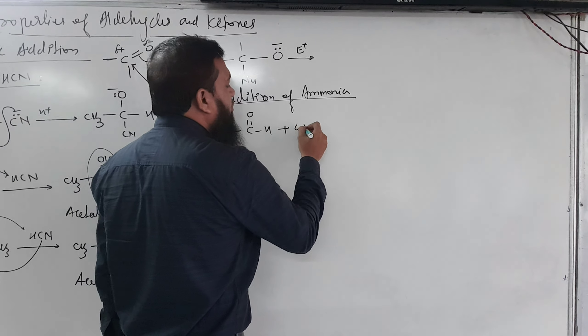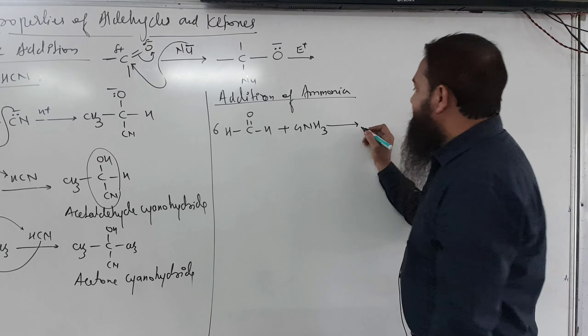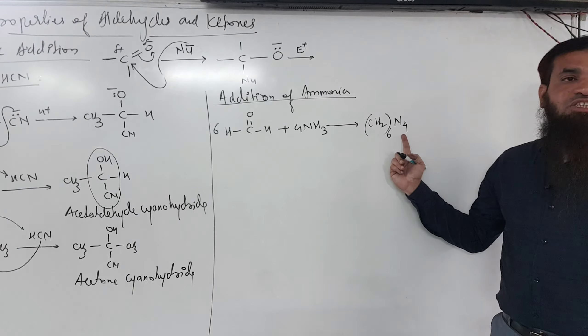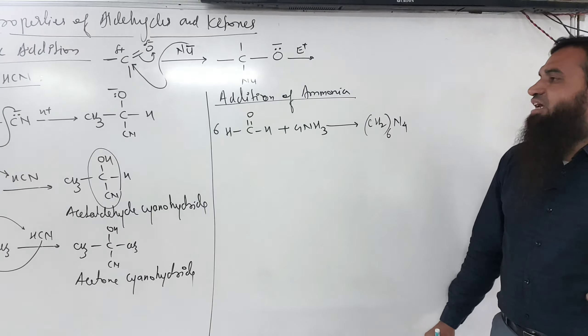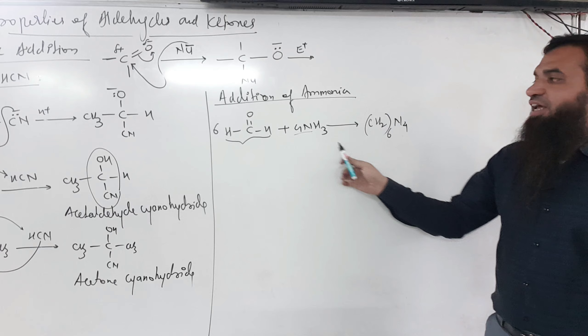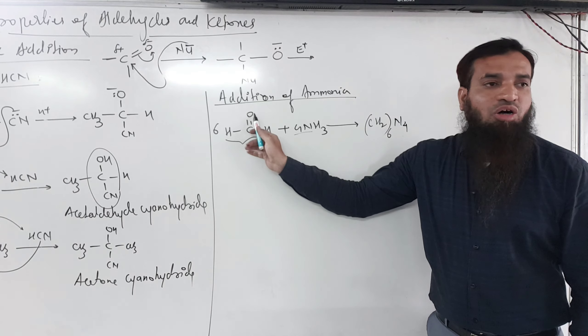Next nucleophilic addition is the addition of ammonia to formaldehyde. Six moles of formaldehyde and four moles of ammonia react together. Ammonia adds to formaldehyde in a typical way, but it forms urotropin — what is urotropin? It is hexamethylene tetramine. Hexamethylene means six methylene groups, and tetramine means four nitrogen atoms.